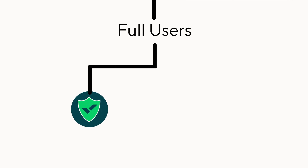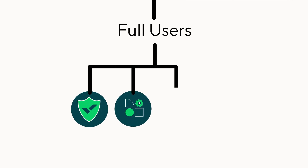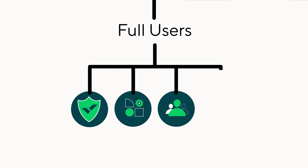Full users include account owners, admins, regular users, and external users. These license types give users access to most of Wrike's features, enabling them to manage tasks, oversee projects, and collaborate with others.